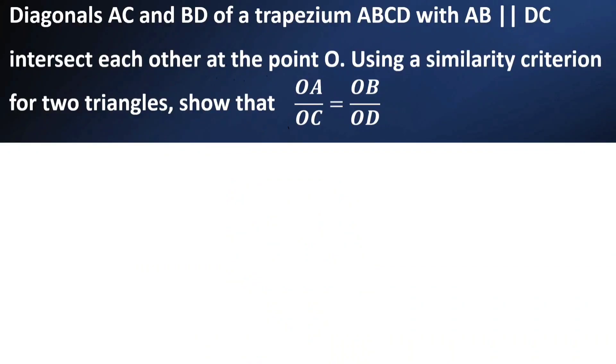In the question, it is given that diagonals AC and BD of a trapezium ABCD with AB parallel to DC intersect each other at the point O. Using similarity criterion for two triangles, show that OA by OC is equal to OB by OD.